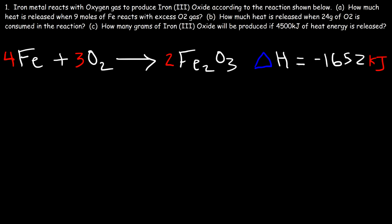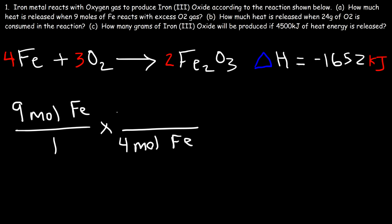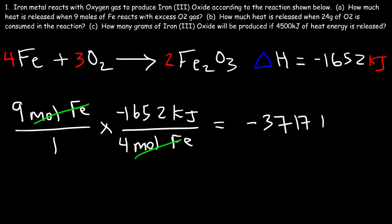How much heat is released when 9 moles of Fe reacts with excess oxygen gas? We start with 9 moles of Fe. Our conversion factor is that 4 moles of Fe will generate 1652 kilojoules of heat energy. We put moles of Fe on the bottom and negative 1652 kilojoules on top so the units cancel. The answer is 9 times 1652 divided by 4, which gives 3717 kilojoules of thermal energy released.